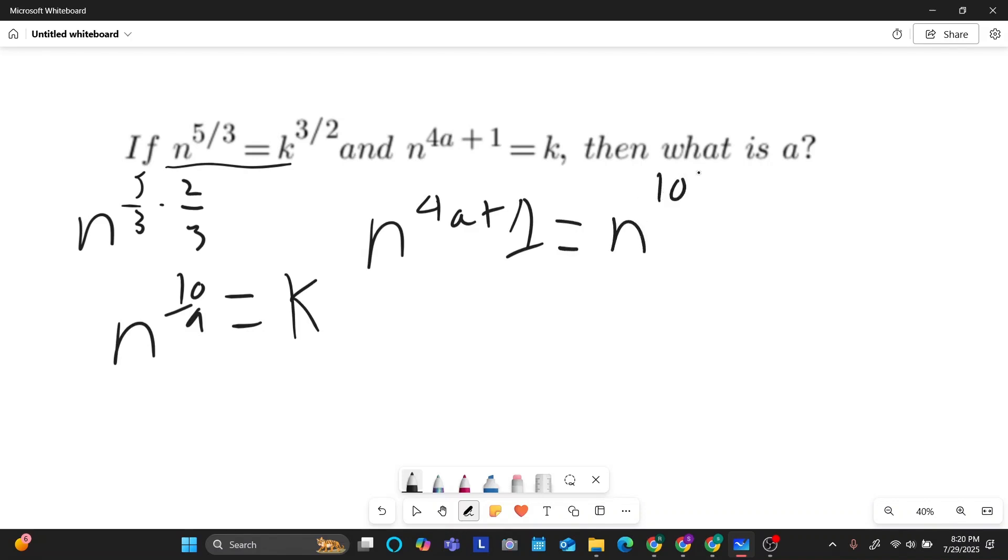So I'm going to take that and plug it in for this k over here. So now n to the power of 4a plus 1 equals n to the power of 10 over 9. Since you're working with the common bases, you can set the exponents equal to each other. So 4a plus 1 is equivalent to 10 over 9. And then from here is just basic algebra.